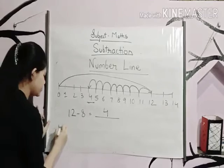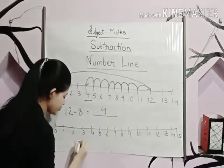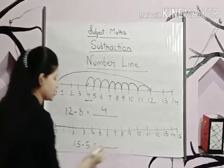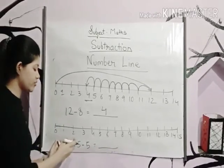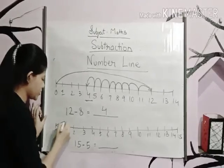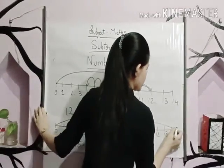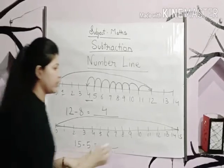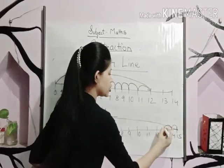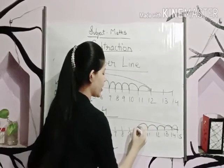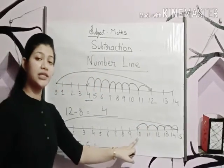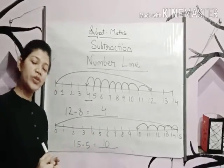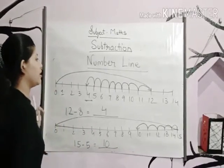Let's have one more example: fifteen minus five is equal to dash. First we go to fifteen on the number line. Then we come five steps back: one, two, three, four, five. We land on ten. So our answer is ten. I hope this much is clear to you all.